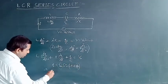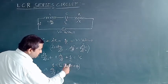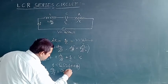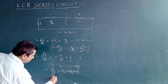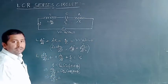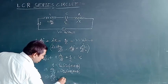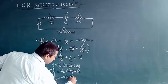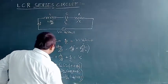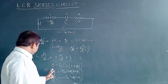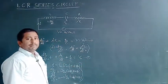Differentiating q = qm·sin(ωt + θ), we get dQ/dt = ω·qm·cos(ωt + θ). Differentiating again, we get d²Q/dt² = −ω²·qm·sin(ωt + θ). Now we substitute these three expressions for q, dQ/dt, and d²Q/dt² into equation (1).